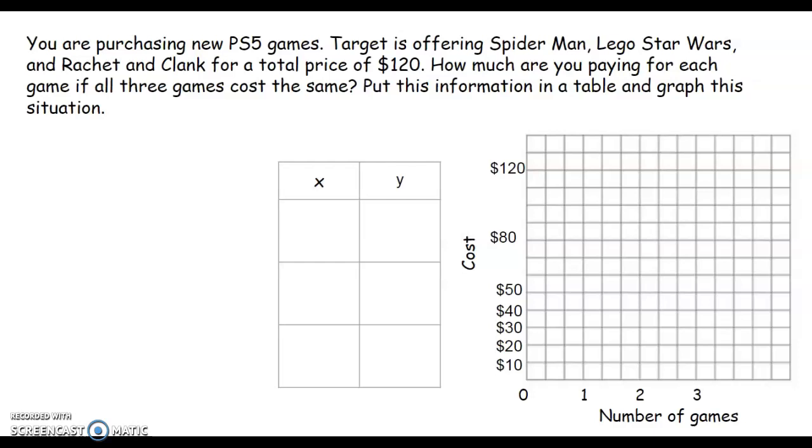It says, you are purchasing new PS5 games. Target is offering Spider-Man, Lego Star Wars, and Ratchet & Clank for a total of $120. Pretty good deal, I believe. How much are you paying for each game if all three games cost the same? Put this information in a table and graph the situation.